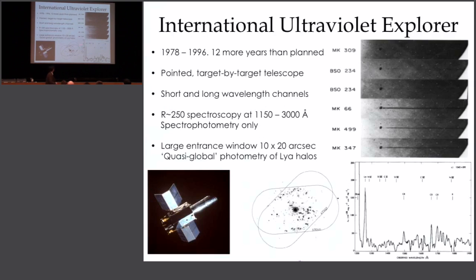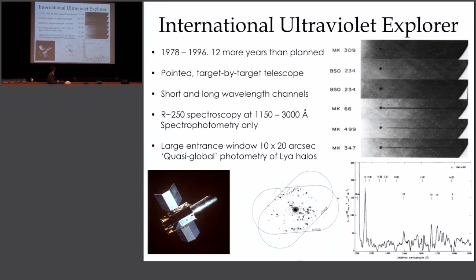This is how data from the IUE looked — the satellite that flew a year after this observation was taken. You have these microchannel plate things — the equivalent of a CCD then. Here's a bright spot: this is the geocoronal Lyman-Alpha line, and then with increasing wavelength you see the continuum of these starbursts.